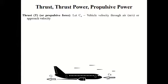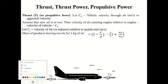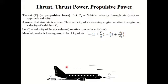The first term is thrust, which means it is the force. This is also called the propulsive force. Let us suppose that CA is the vehicle velocity — vehicle means the aircraft. This aircraft is moving in the air with the velocity CA, and this is also called the approach velocity.